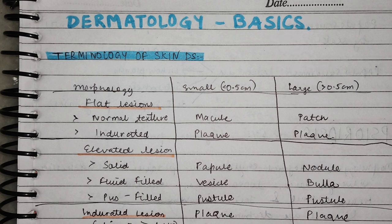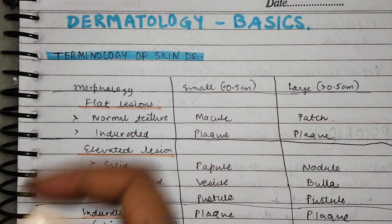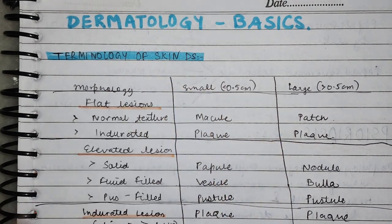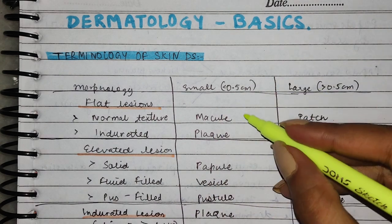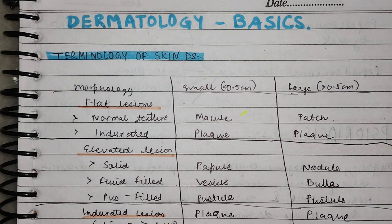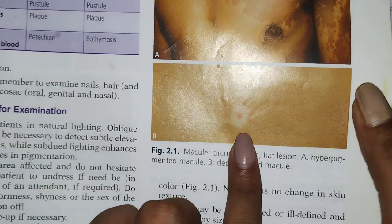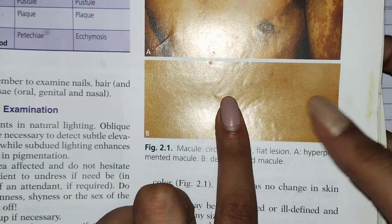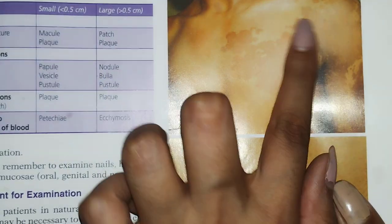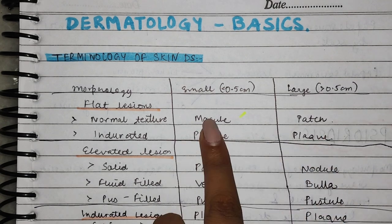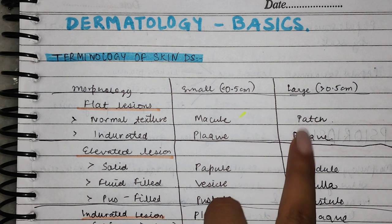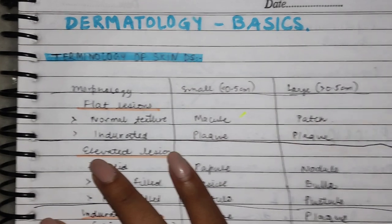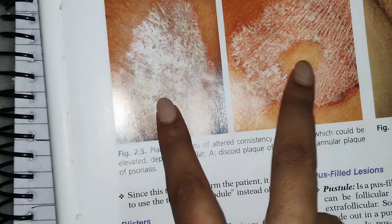Now there are two types of flat lesions: small size and large size. Small size lesions are called macule — macule is very commonly seen and heard. Large size flat lesions are called patch. If this area is slightly indurated, it is called plaque. As you can see in these photos, this is a plaque formation — the texture will be slightly different and there are indurated lesions.